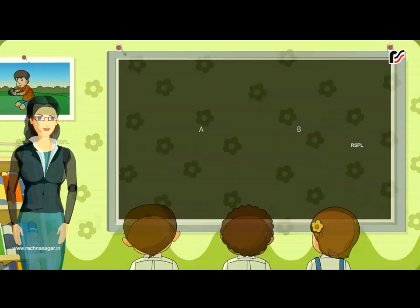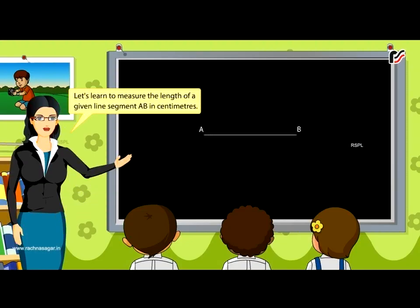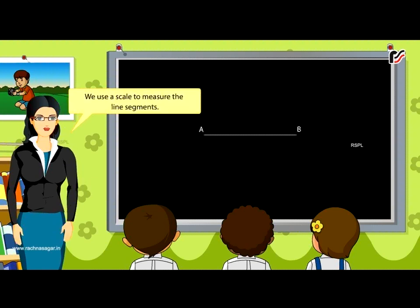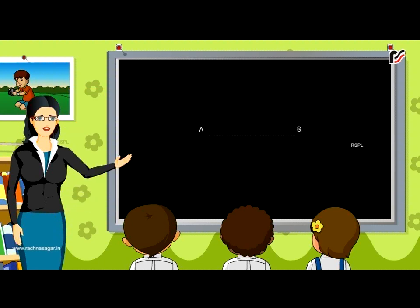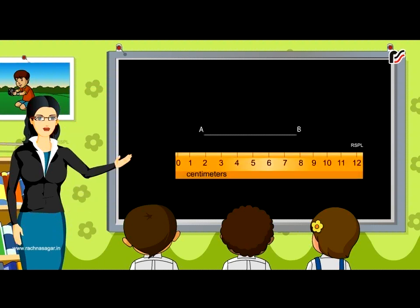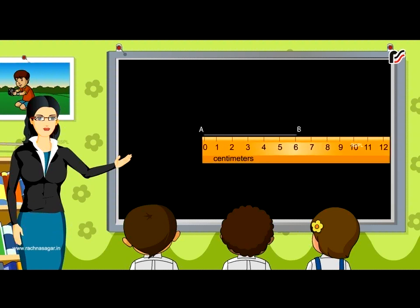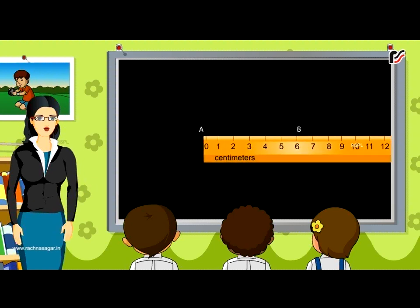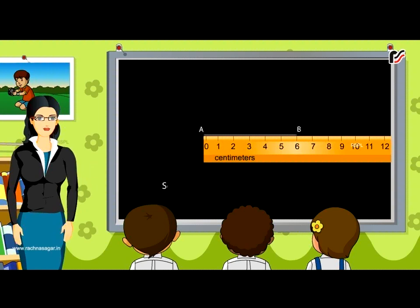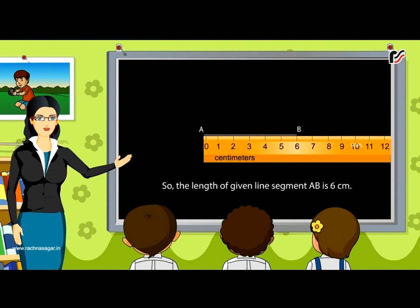Measuring and drawing line segments. Let's learn to measure the length of a given line segment AB in centimetres. We use a scale to measure line segments. Place the edge of the scale showing centimetres along the line segment AB. Adjust the scale so that the zero mark is at point A. Read the scale at point B. Here, the mark on the scale is at 6 centimetres, so the length of given line segment AB is 6 centimetres.